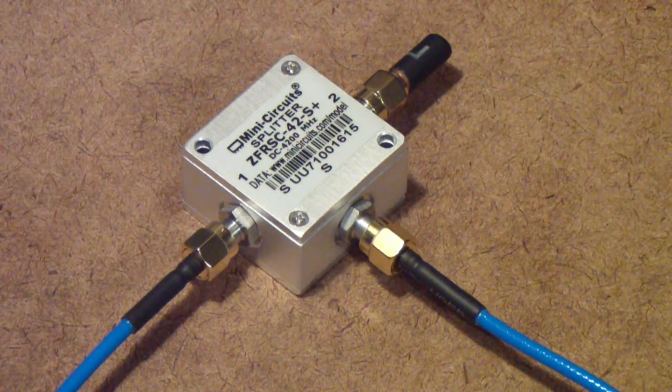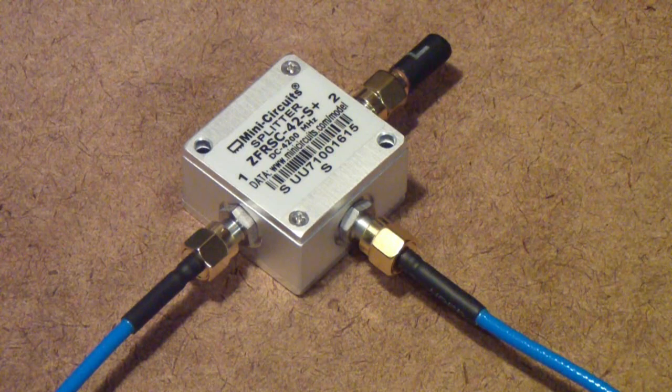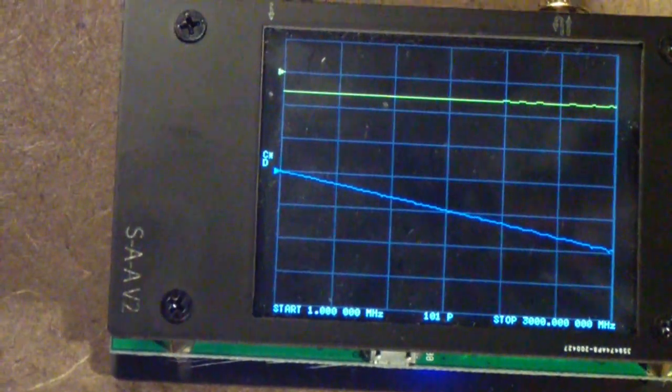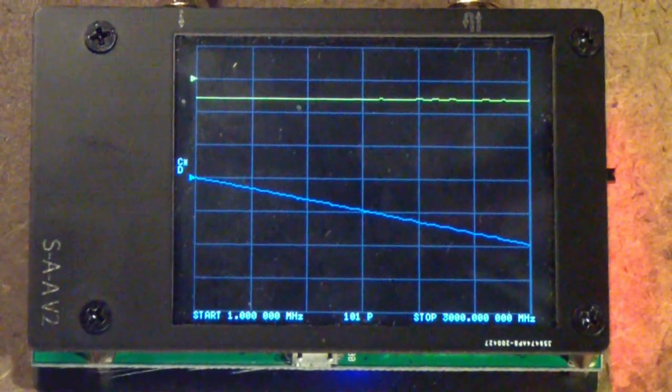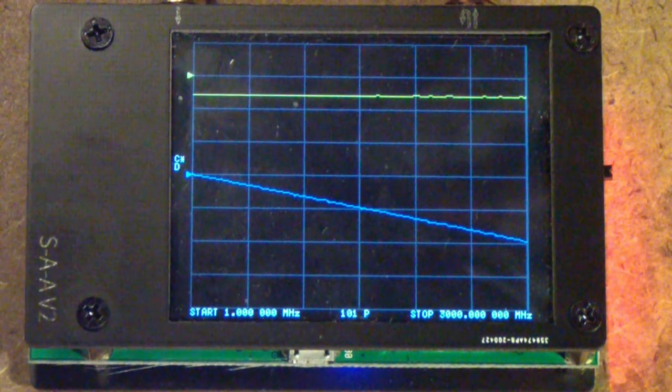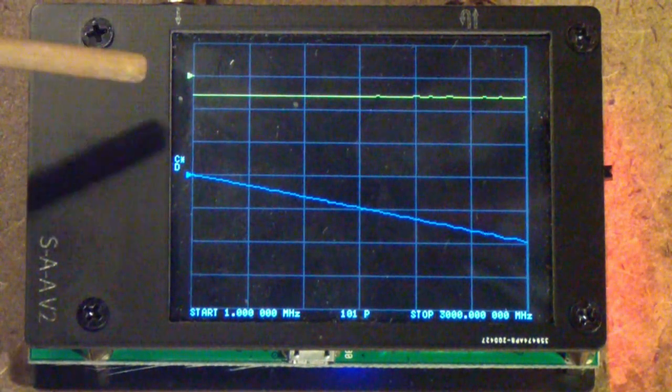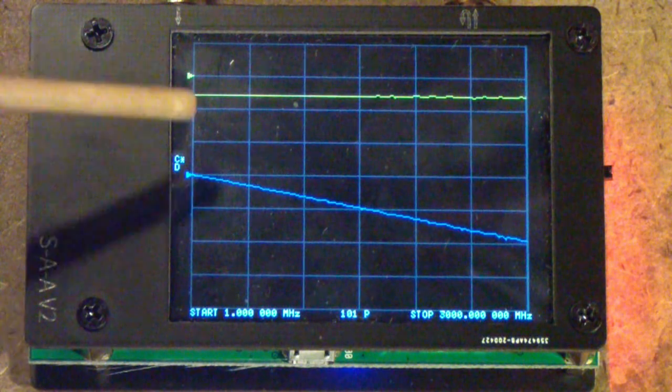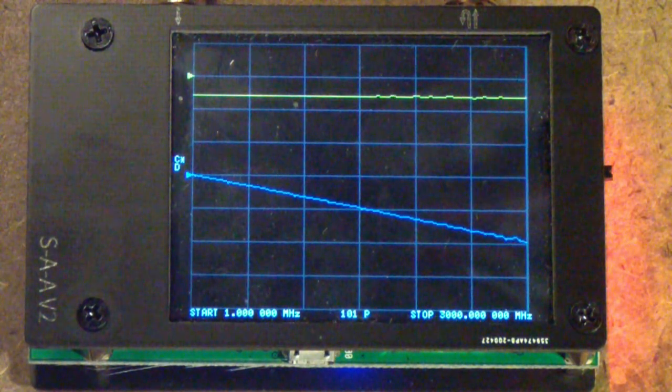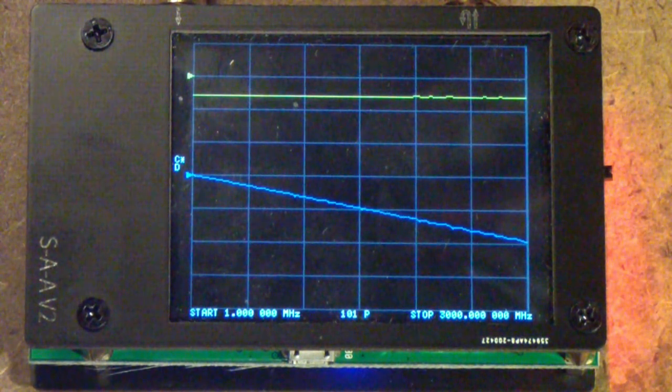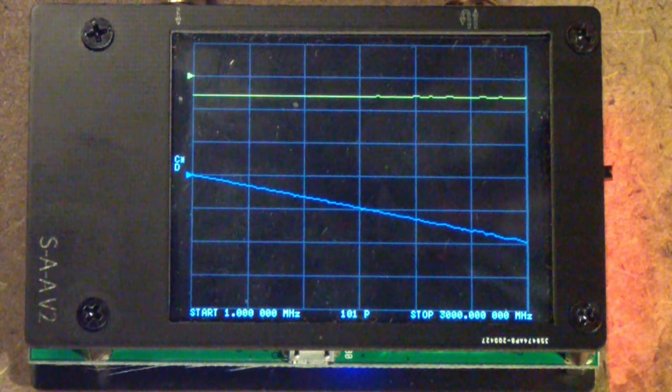Furthermore, I used the short and open standards that came with the Tiny to not only calibrate the Tiny, but also to calibrate the V2. So in both cases, I recalibrated as soon as I set the frequency ranges. In both cases, I used the same traces, that is magnitude, log magnitude for trace zero and phase for trace one.